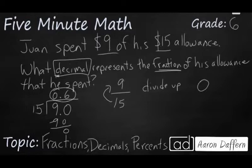So the decimal here is going to be 0.6. Now the question might be, what percent of his allowance did he spend? Well, once you have the decimal, it's easy to turn a decimal into a percent.